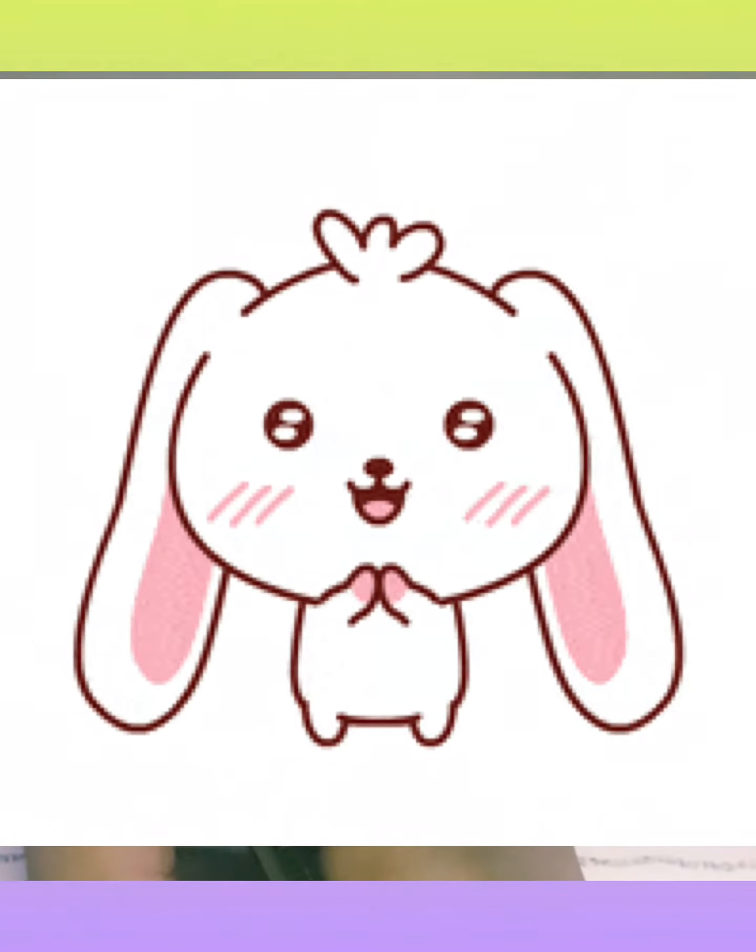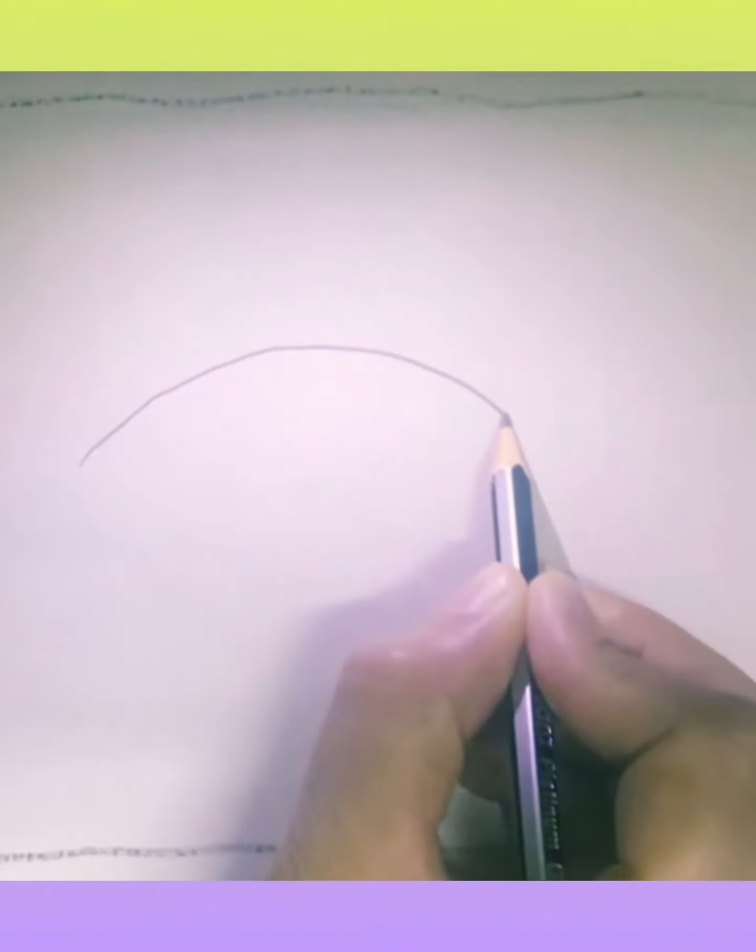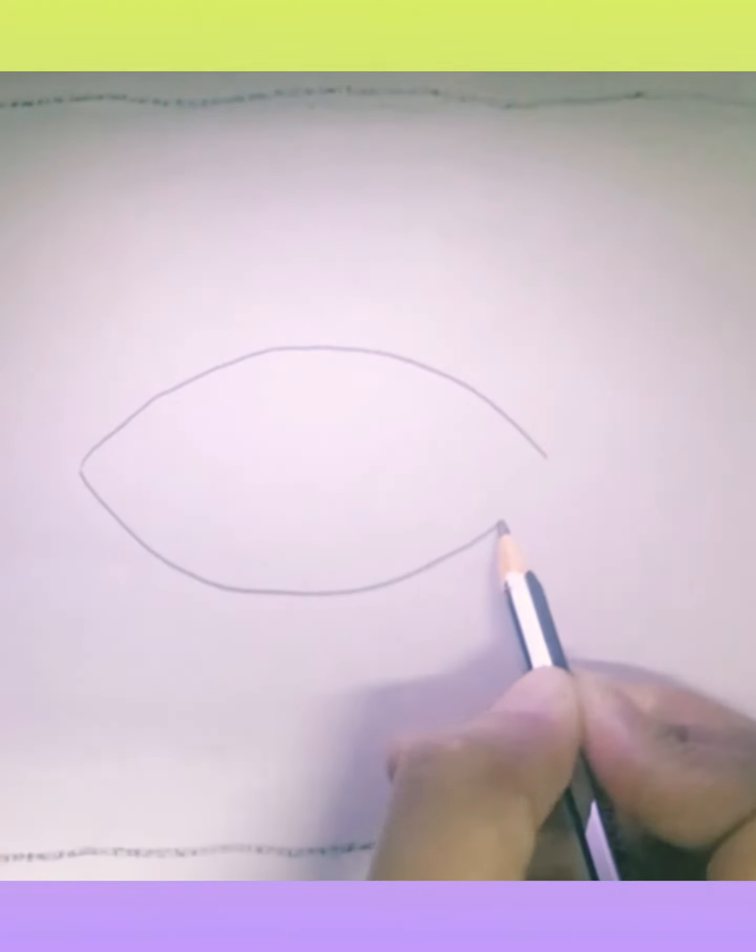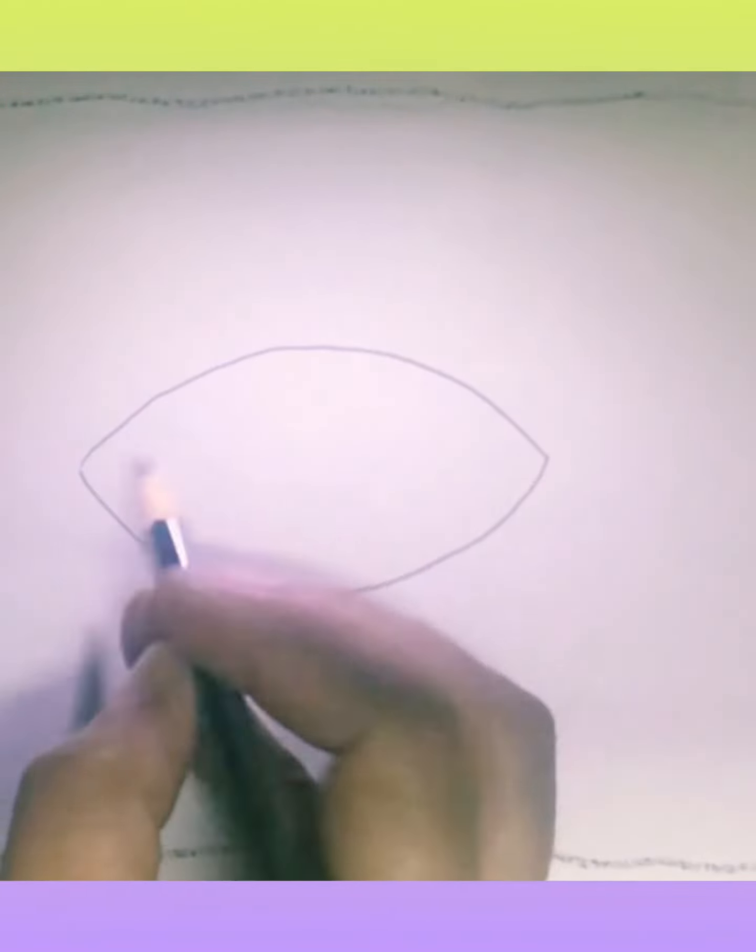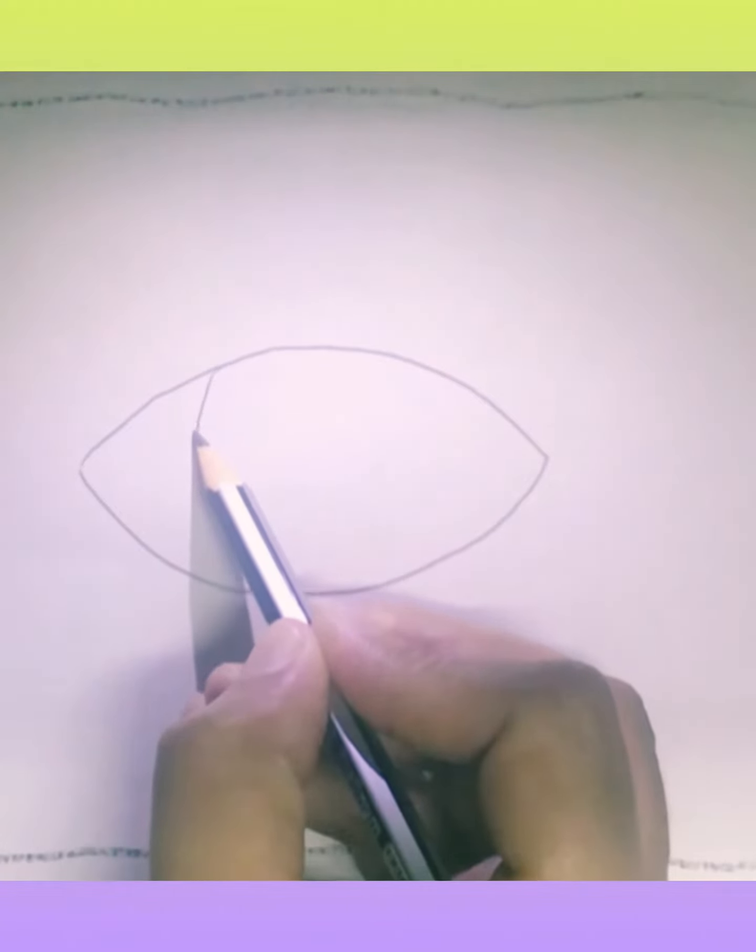Now we will start to draw a fish. Make a curve like this, and in the down make one more curve same like. Join it and here we will make one very slight curve.